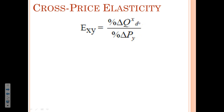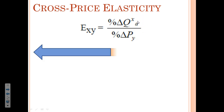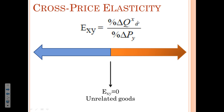If there's no effect — if the price of one good changes and it does nothing to the quantity demanded of the other good — then we would say that we have unrelated goods. It's like saying, if the price of a stapler goes up, what does that do to the quantity demanded for a Coke? Nothing. And so therefore, they're unrelated.